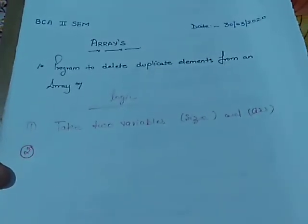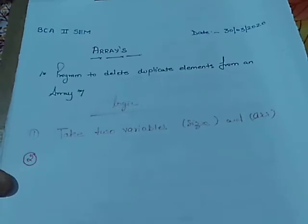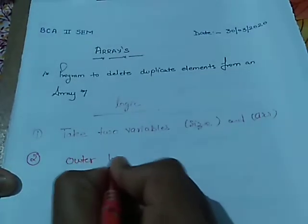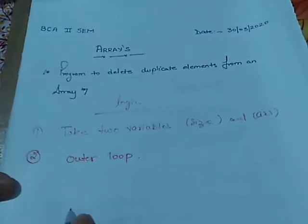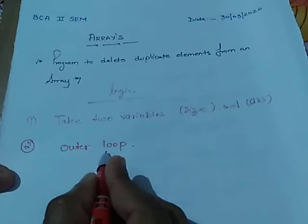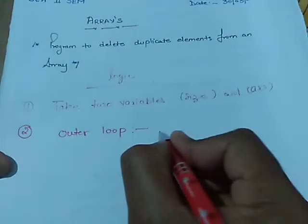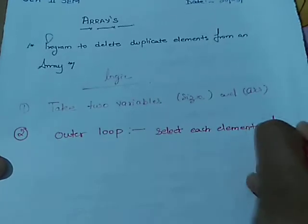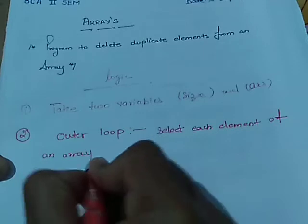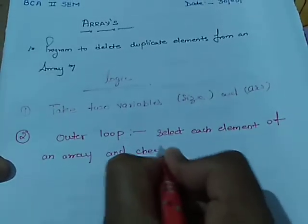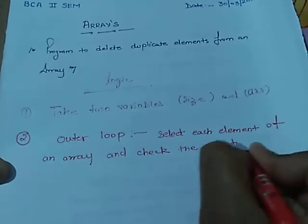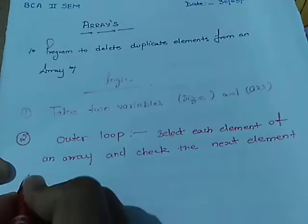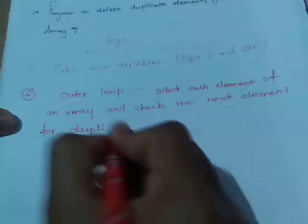Our second point is to find duplicate elements in the given array. We have to use two loops: one is the outer loop and the other is the inner loop. In the outer loop we have to select each element of the array and check the next element for duplicacy.